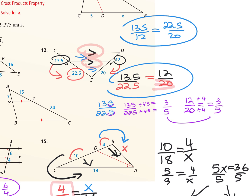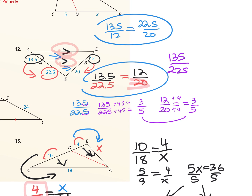Going back to simplifying 135 over 225 — if you didn't catch that 45 was the GCF, you could first divide by 5 to get 27 over 45, then divide by 9 to get 3 to 5. So you can still break it down step by step if dividing by 45 all at once wasn't obvious.